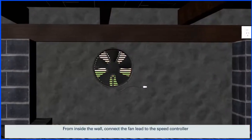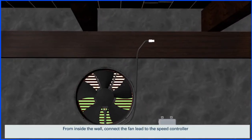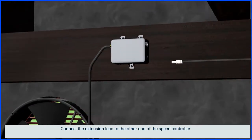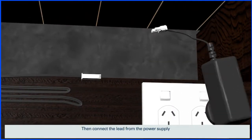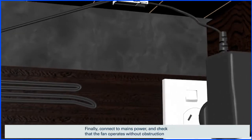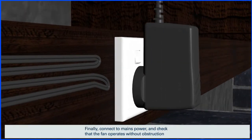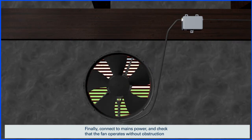From inside the wall, connect the fan lead to the speed controller. Connect the extension lead to the other end of the speed controller, then connect the lead from the power supply. Finally, connect to mains power and check that the fan operates without obstruction.